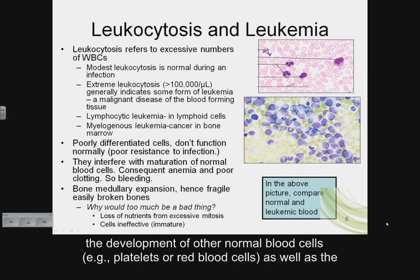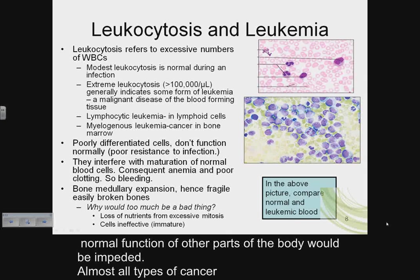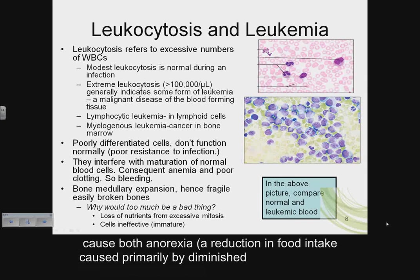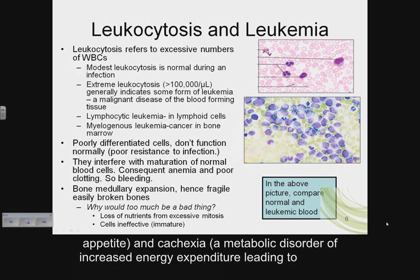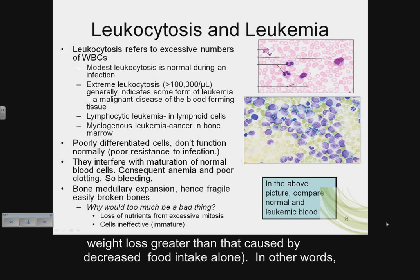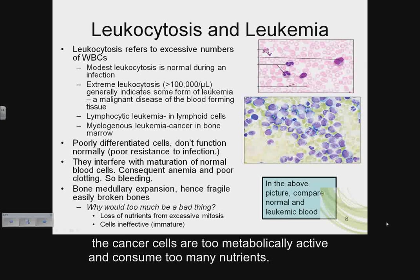Almost all types of cancer cause both anorexia — a reduction in food intake caused primarily by diminished appetite — and cachexia, a metabolic disorder of increased energy expenditure leading to weight loss greater than that caused by decreased food intake alone. In other words, the cancer cells are too metabolically active and consume too many nutrients.